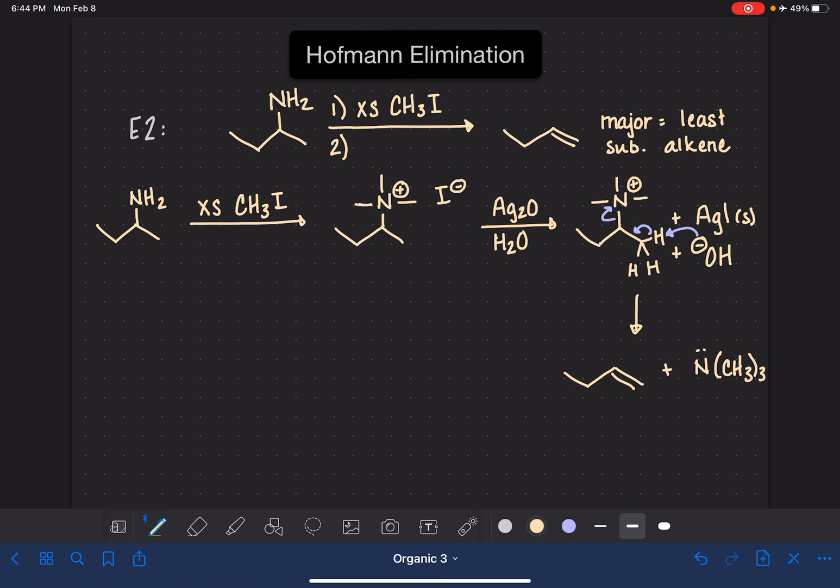So let's look at just a couple of specific examples. Let me write our step two reagents here. So our step two reagents are the silver oxide, water, and a lot of times a little bit of heat is necessary to kind of help this reaction move along.